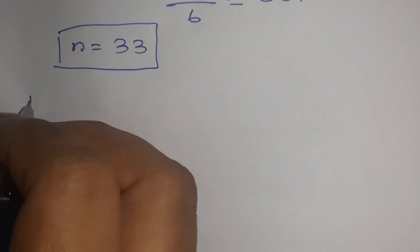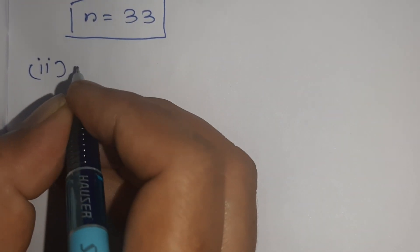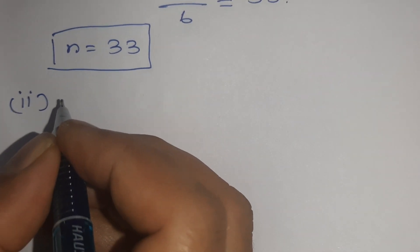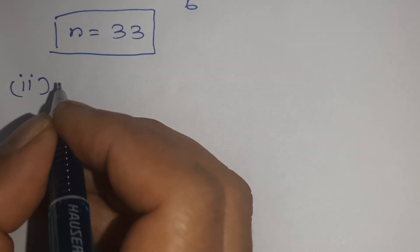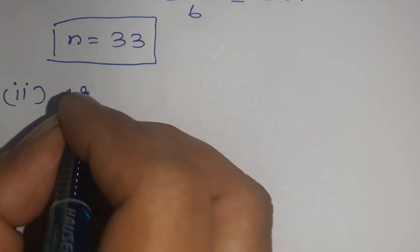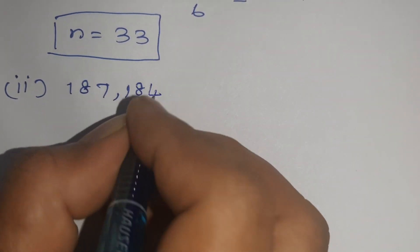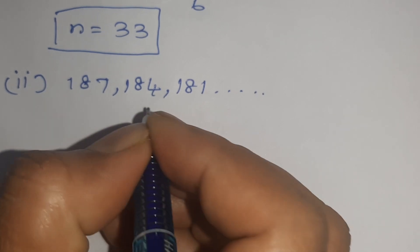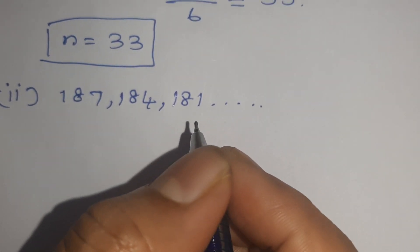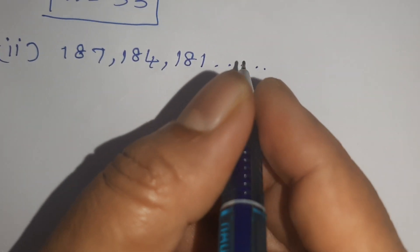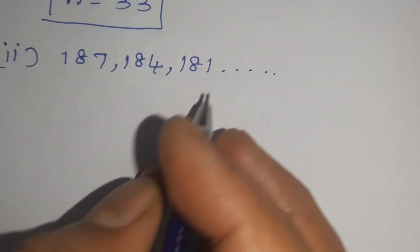The second question is: which term of the AP formed by Madhuri is the first negative term? Madhuri's AP is 187, 184, 181, etc. So we have to find the first negative term.